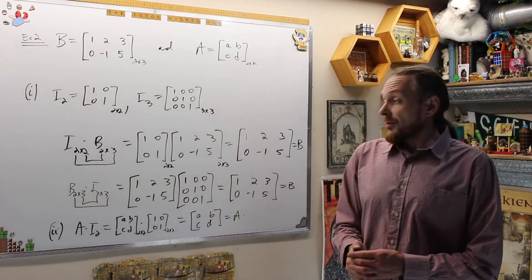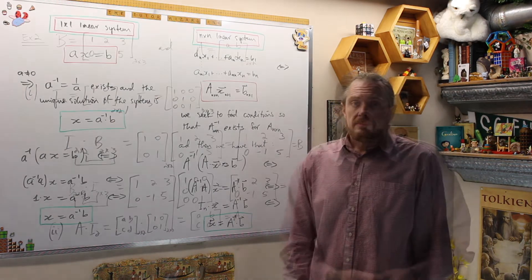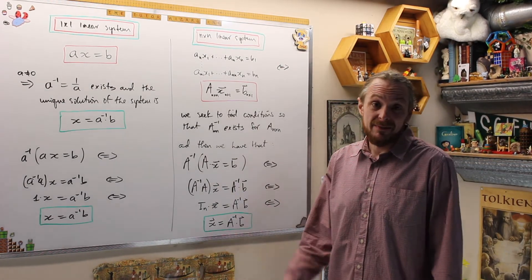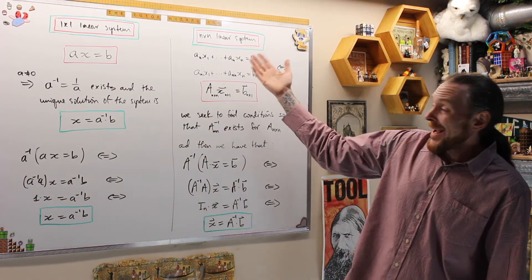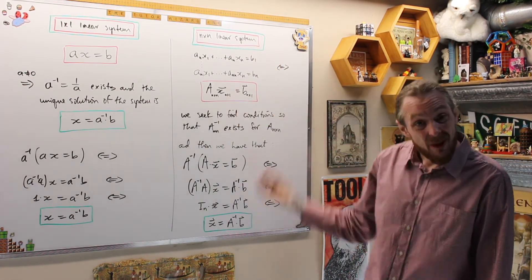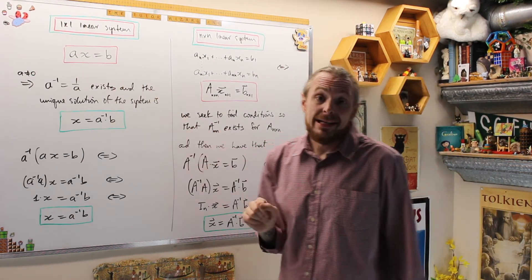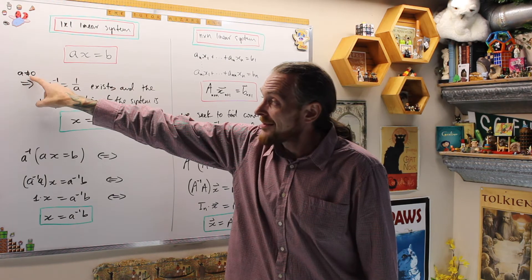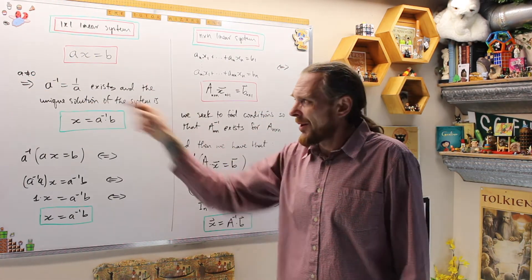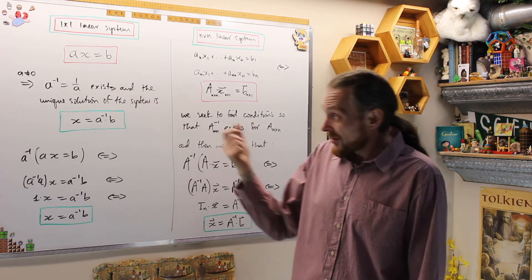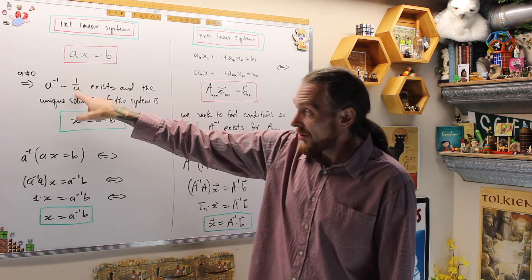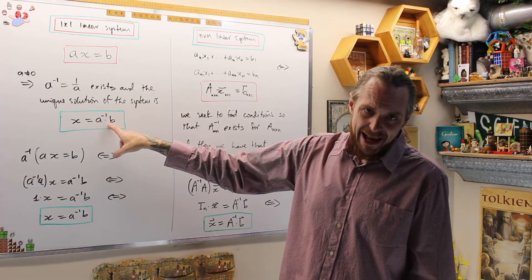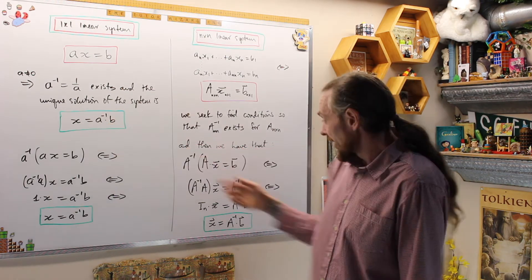Now let's look at what we mean by the inverse of a matrix. What we're doing is trying to mimic the 1 by 1 linear system. The idea is to view a linear n by n system as a matrix equation and then solve it. For a 1 by 1 linear system AX = B, if A is not 0, then the multiplicative inverse of A exists — A^{-1}, or 1/A, the reciprocal — and the unique solution is X = B/A, or A^{-1}B.